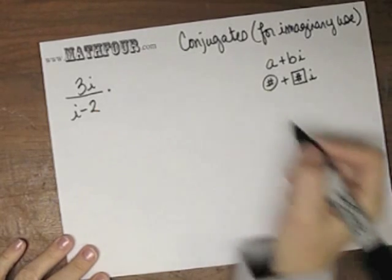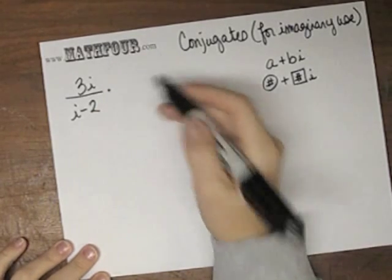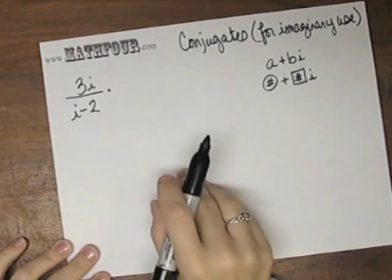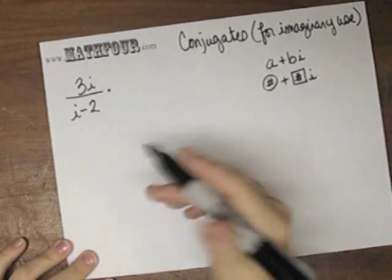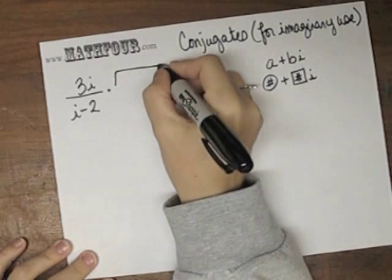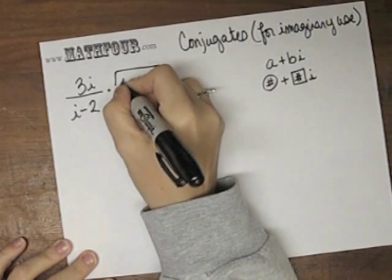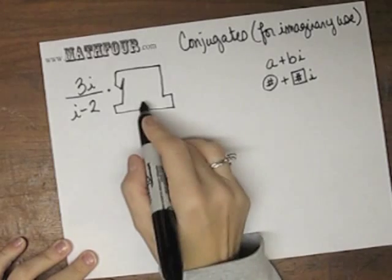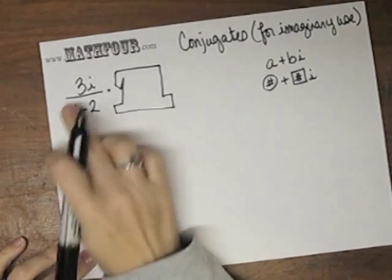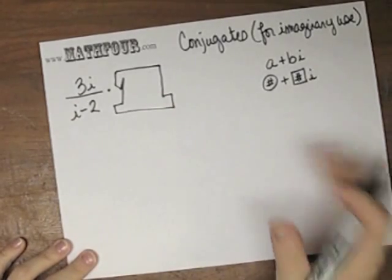Well, you can multiply by the conjugate over the conjugate of the bottom. So people say multiply by the conjugate. Well, you're not really multiplying by the conjugate. You're multiplying by a clever form of 1. Because you can multiply anything by 1 all day long and nothing changes.